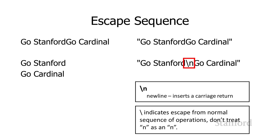So don't treat the n after the backslash as just a regular n to print out. Python says, no, this is something different — there's a special table of escape sequences. It looks it up in that table and finds that \n is not a regular n, but is actually a carriage return.